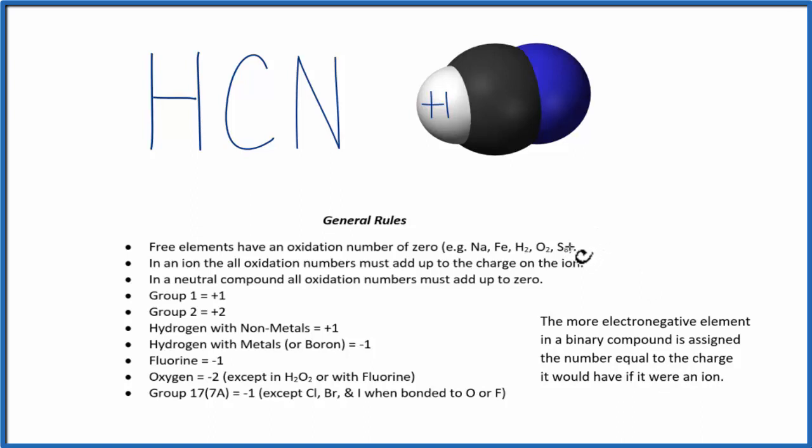If we go to the periodic table, nitrogen is in group 15 and has a three minus charge. So the oxidation number is going to be minus three.